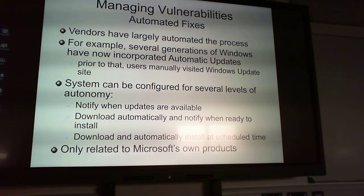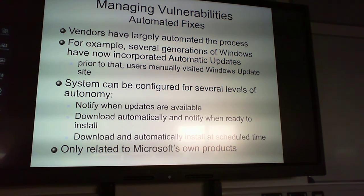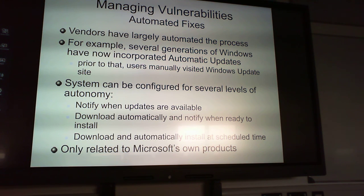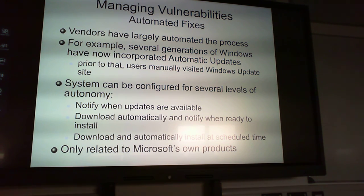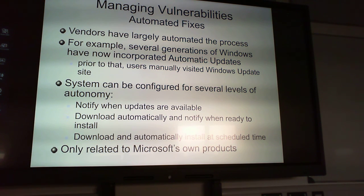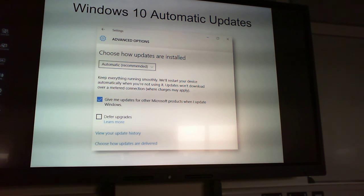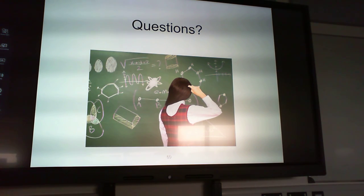Vendors typically automate the process of fixes. Several generations of Windows have now incorporated automatic updates — prior to that, users manually visited the Windows Update site. The system can be configured for several levels of autonomy: notify when updates are available; download automatically and notify when ready to install; or download and automatically install at a scheduled time. This is only related to Microsoft's own products. Windows 10 automatic updates are on by default, which is the recommended option.